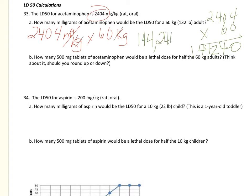When we do this math we end up with 144,240 milligrams. That's kind of a lot. Well, how many pills is that? A typical Tylenol is 500 milligrams, so we'll take that 144,240...